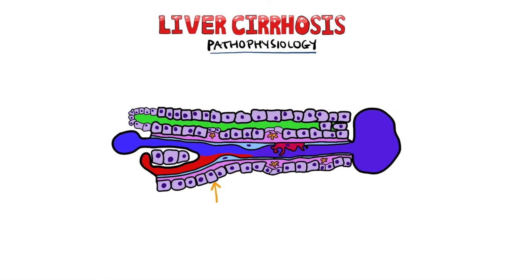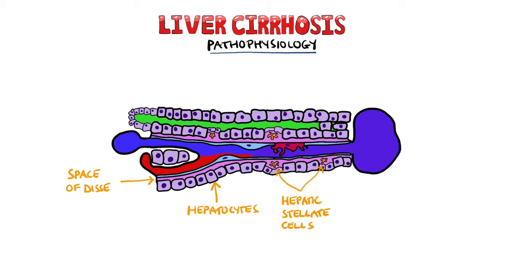So what actually happens in cirrhosis? This is a normal sinusoid in the liver, which is a specialized form of capillary. The hepatocytes of the liver are separated from these sinusoids by a space known as the space of Disse, where hepatic stellate cells are found. These cells are crucial in cirrhosis pathophysiology because they are involved in scar formation in response to liver damage.